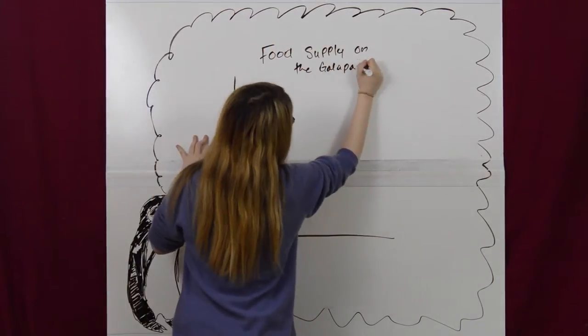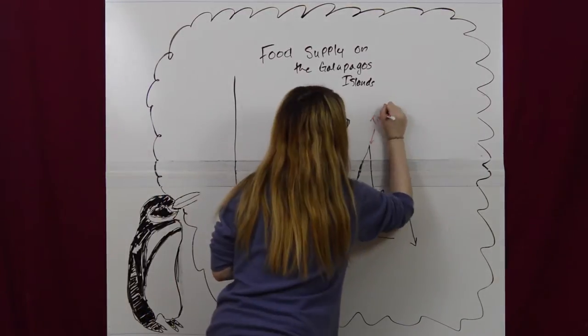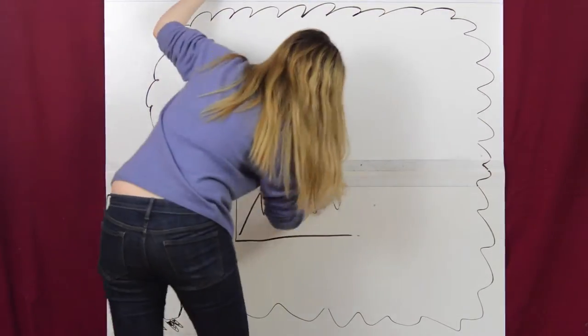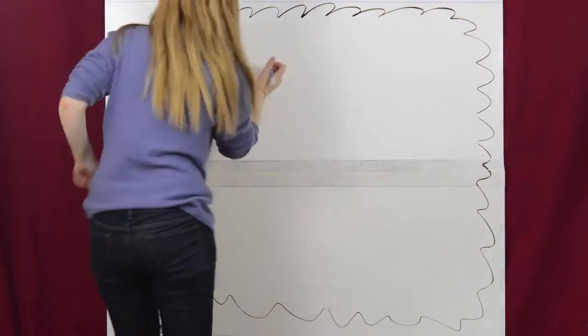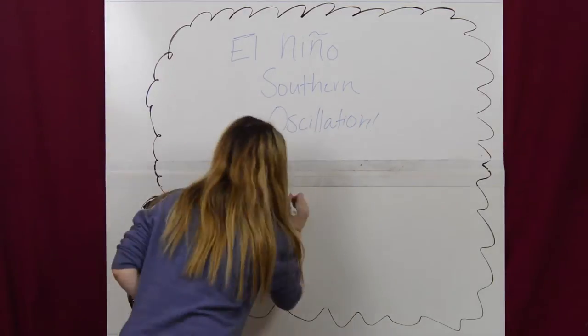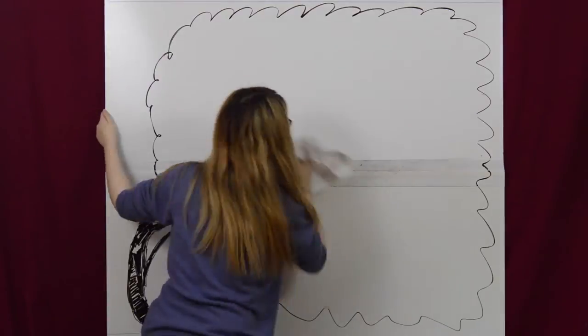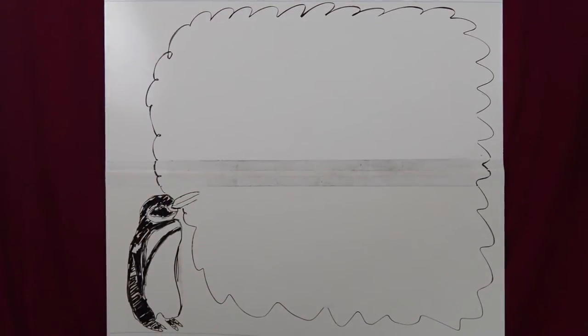Their flexible mating season allows them to reproduce whenever they have a stable food supply. The unpredictable water currents that bring fish for the penguins to feed on are further impacted by the change in water temperature caused by the El Nino southern oscillations. The flexible breeding season has allowed these penguins to adapt to harsh conditions until food becomes available again.